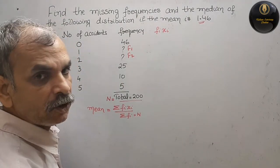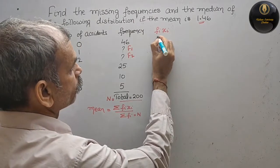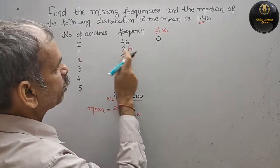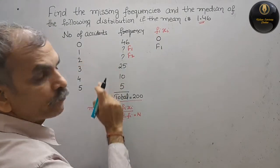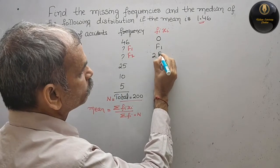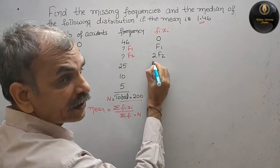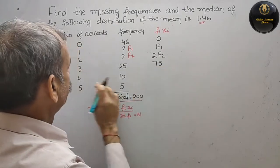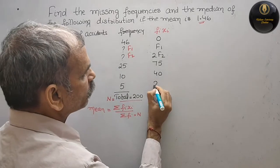Next we have to go for f_i x_i, so we will write here f_i x_i. Now multiply: 0 into 46 is 0, next comes your 1 into f1 is f1, 2 into f2 is what, 2f2.